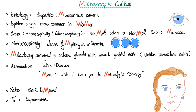What do you see microscopically? You see meticulously arranged, meticulously ordered glands with intact goblet cells. Now contrast that with ulcerative colitis — in UC, they are haphazardly arranged and the goblet cell is toast.